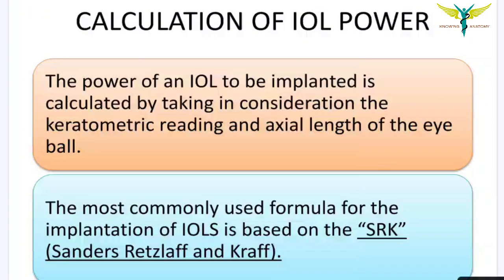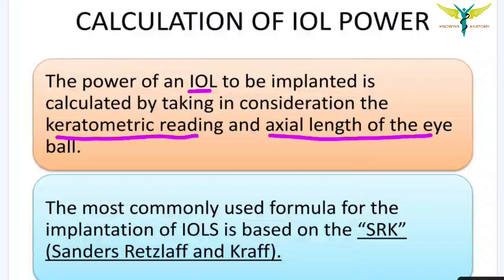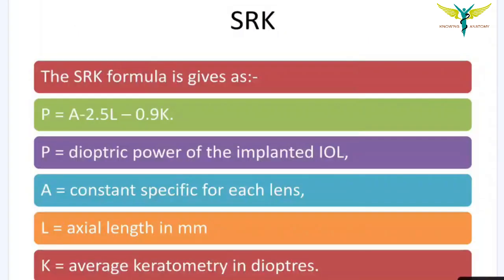For the calculation of IOL power, the power of an intraocular lens to be implanted is calculated by taking into consideration the keratometric reading and the axial length of the eye. The most common formula for calculation of IOL power is based on SRK — that is the Sanders, Retzlaff, and Kraff formula.